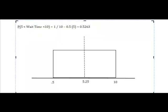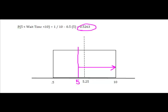What that tells me is that given a uniform distribution, this area under the distribution right here is 52.63%, or 52.63 percent of the time the wait time will be greater than five minutes, but we know that it will always be less than 10 minutes.